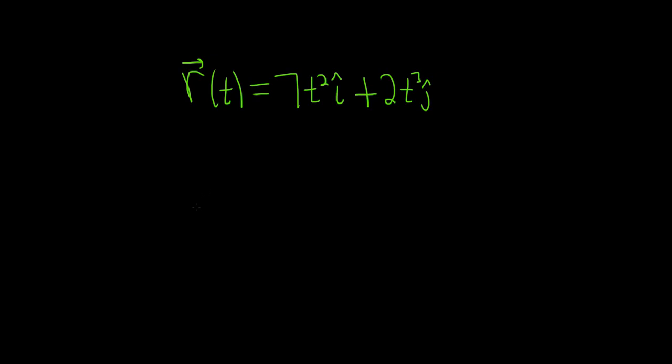In this problem, we have to find the intervals on which the vector-valued function is smooth. So a vector-valued function will be smooth whenever the derivatives of the component functions are continuous and when they're not both zero.